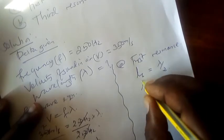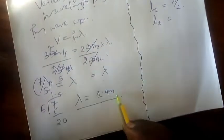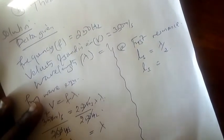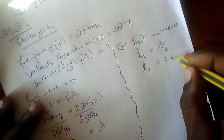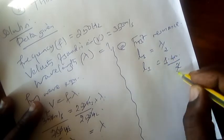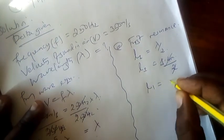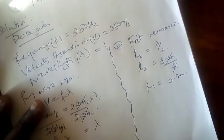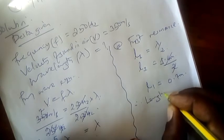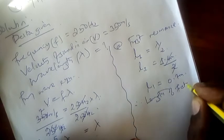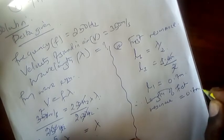We begin to substitute. The first length equals - we already found the wavelength, which is 1.4 meters. So we write the value of wavelength here: 1.4 meters divided by 2. When we divide, we get 0.7. Therefore, L1 equals 0.7 meters. We conclude the length of first resonance is equal to 0.7 meters.